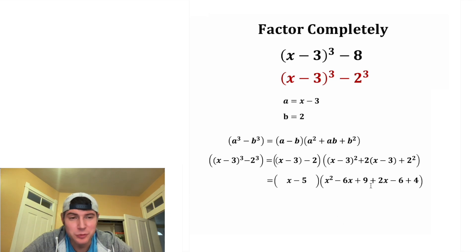Now we can simplify this one step further. Let's bring down the first parentheses. And for the second parentheses, let's combine like terms. We have 1x squared, and then we have negative 6x plus 2x, which is negative 4x. And for the constants, we have 9 minus 6, which is 3, plus 4, which gives us 7.